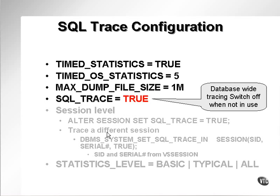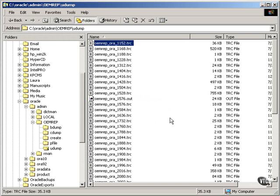Timed OS statistics simply executes statistics collection for time statistics every 5 seconds. The max dump file size is set to 1 meg. What that means is that these trace files will never go over 1 meg.